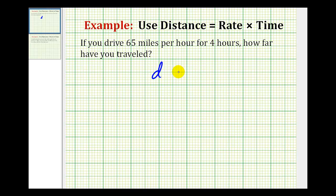Well, our formula is distance equals rate times time. So 65 miles per hour would be our rate and four hours would be the time.